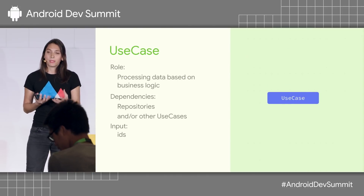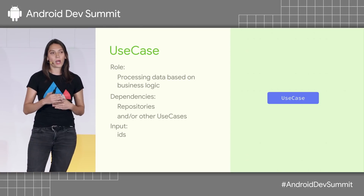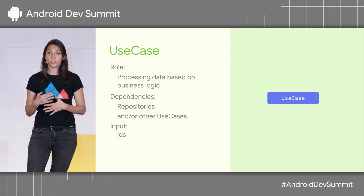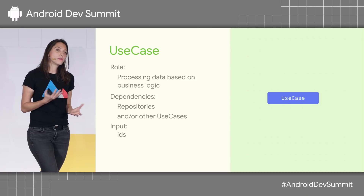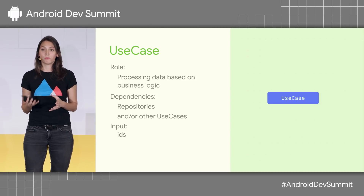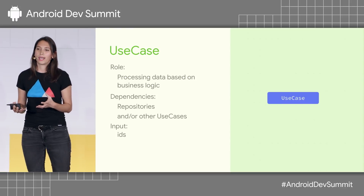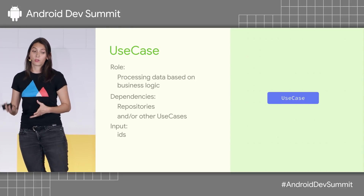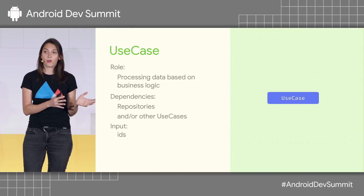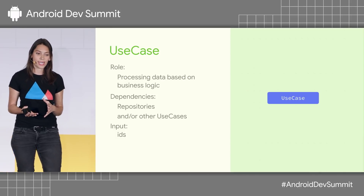Because the business logic was quite complex, we decided to add another layer — use cases. The role of the use cases is just to process data based on business logic. These will be small, lightweight classes that could also be reused. The use cases would depend on repositories and/or other use cases.